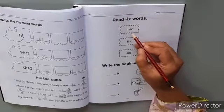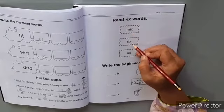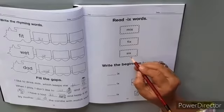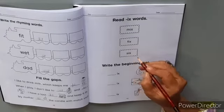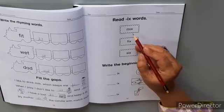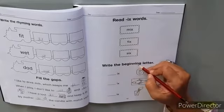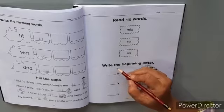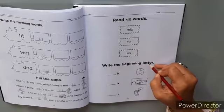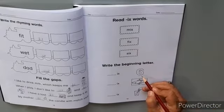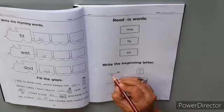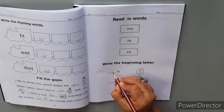X: mix, fix, six. Now read it again after me. Mix, fix, six. Write the beginning letter. What is this? Good, it is a six.